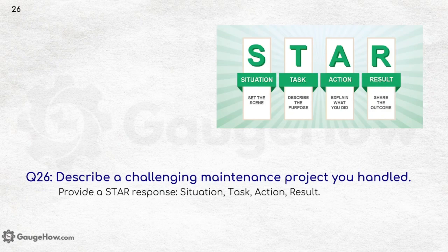Describe a challenging maintenance project you handled. In interviews, always provide a STAR response: S stands for situation — describe the scene; T stands for task — tell the purpose of the task you performed; A stands for action — explain the entire action you took; and R stands for result — share your outcomes.